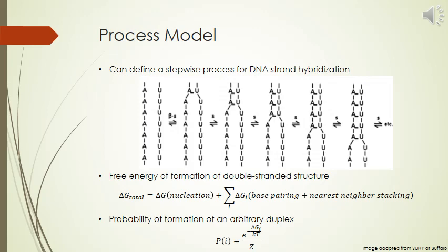In fact, the probability that any duplex where the free energy of formation ΔGi is formed can be determined from statistical mechanics, and the expression is given at the bottom of the slide, where Z is the partition function that includes all other allowable double-stranded structures.